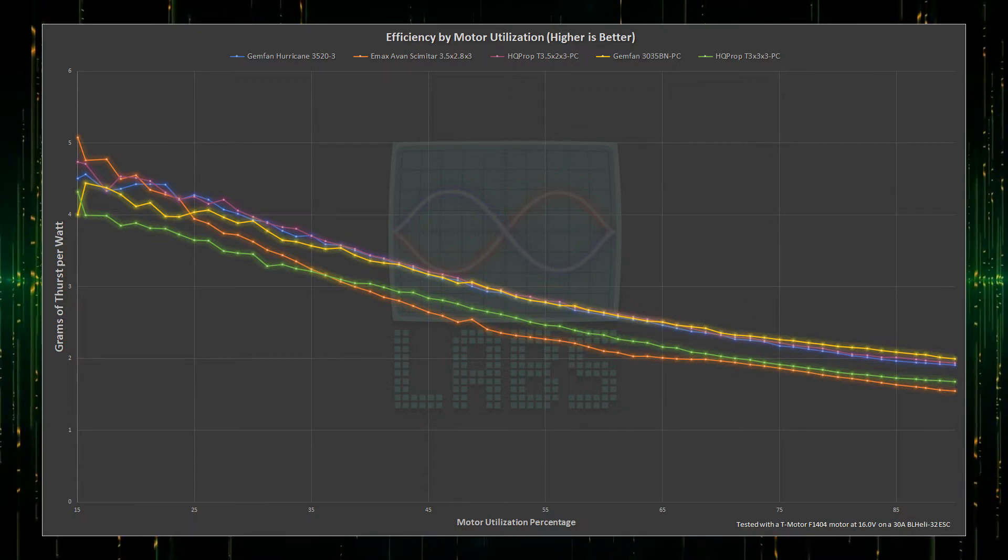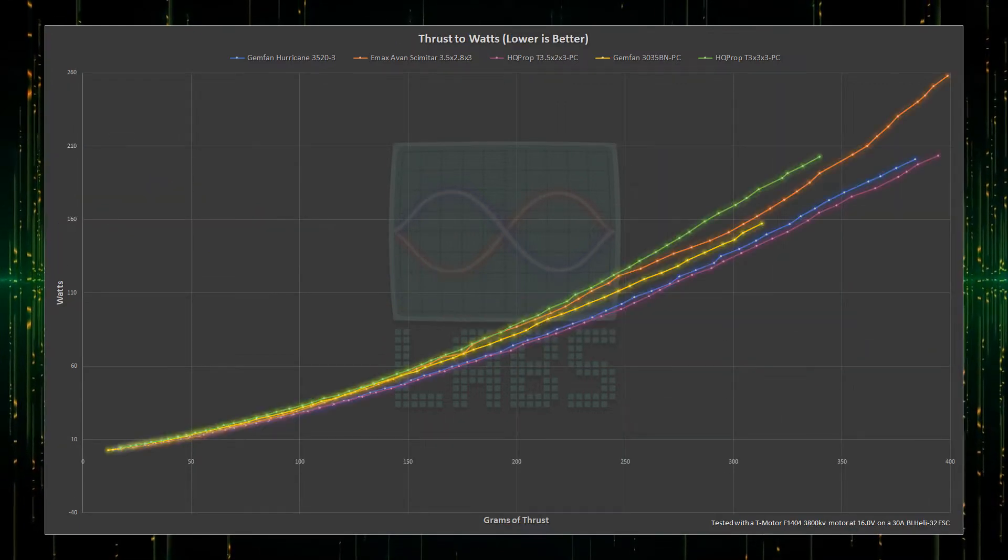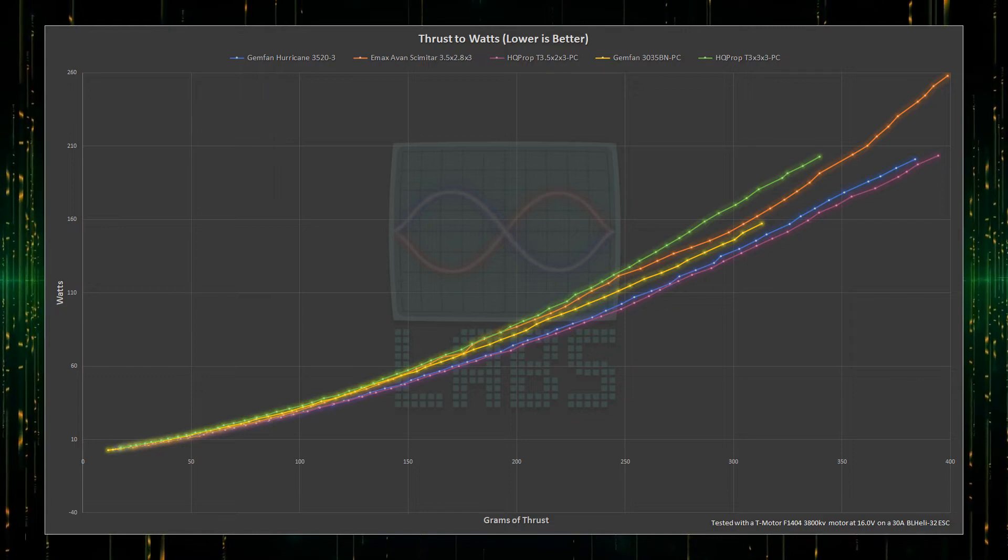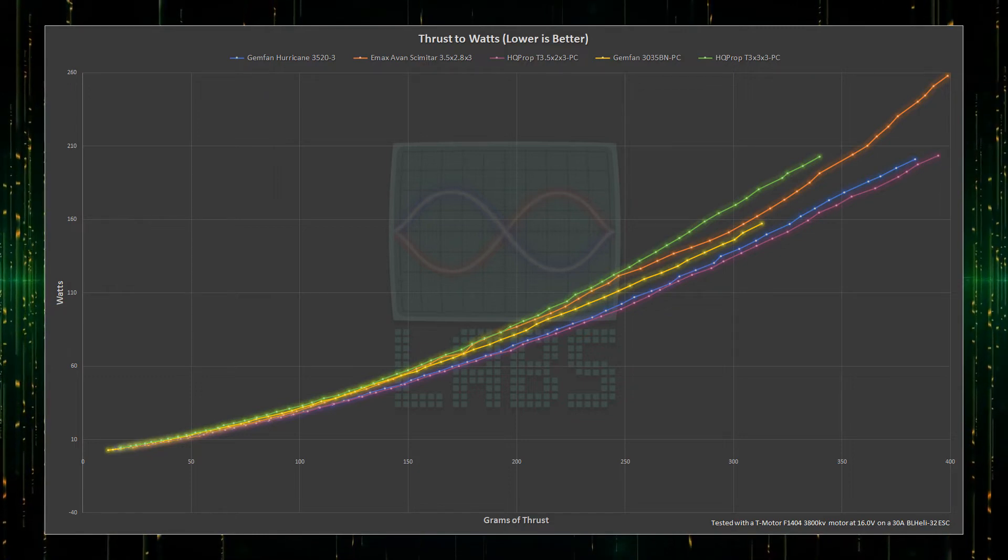Now, we really need to see the thrust generated to watts of power. There it is! The 3.5-inch Gemfan and HQ Prop propellers are exactly where you'd want to see them, as low as possible for watts required, and moving over to the far right for high thrust.